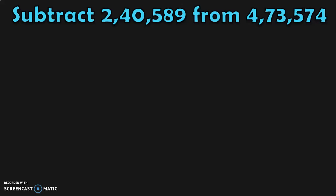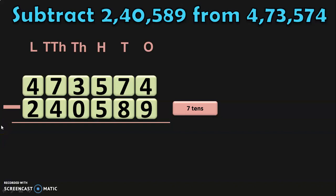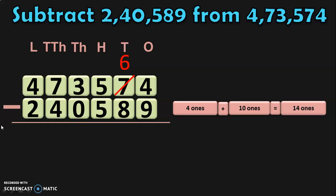Let us do the next sum: subtract 2,40,589 from 4,73,574. Write down the numbers one below the other and write down the place values. Begin the subtraction from the ones place. In the ones place, you have 4 minus 9. Since 9 is greater than 4, move to the tens place. In the tens place, we have 7 tens, which can be regrouped as 6 tens plus 10 ones. Retain the 6 tens and take the 10 ones to the ones place. 4 ones plus 10 ones gives you 14 ones. 14 minus 9 gives you 5.